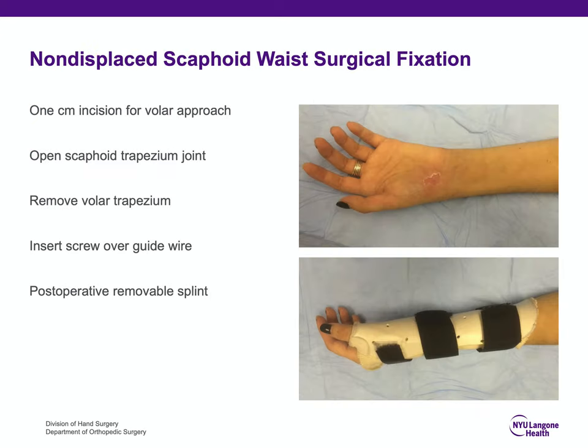For non-displaced scaphoid waist fractures, I commonly use a volar approach through a one-centimeter incision. Some surgeons prefer a dorsal approach — that's surgeon's preference for the waist. I open the scaphoid-trapezium articulation, remove the most volar proximal aspect of the trapezium to allow guide wire placement, insert the guide wire into the scaphoid, and then put the screw over the guide wire. If a patient agrees to surgical fixation, I do not cast them afterward — I put them in a removable splint until they have no pain.